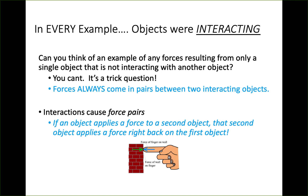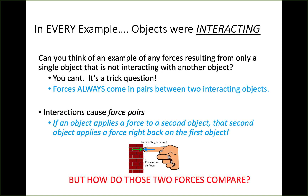Interactions cause force pairs. If an object applies a force to a second object, that second object applies a force right back on the first object. In the picture, we can see the force of the finger pushing on the wall, and the wall is actually pushing back on the finger with a force as well. But how do those two forces compare?